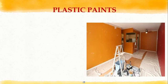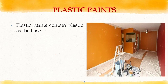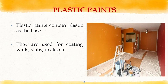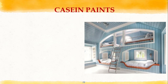Next are plastic paints. Plastic paints contain plastic as the base material. These paints dry very quickly, provide better appearance, and have high covering power. They are used for coating walls, slabs, and decks.